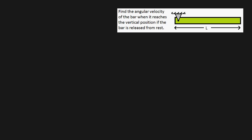Hey guys, in the previous video I showed you how to solve a problem where we've got a bar like this and we're asked to find the angular velocity of this bar when it swings down to its vertical position, assuming it's released from rest.